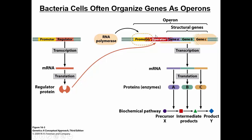Another sequence in the operon is called the operator — a DNA sequence that overlaps with the promoter and the first structural gene. It serves as a landing spot for something called a regulator protein. When the regulator protein binds to the operator, it can either enhance or inhibit the binding of RNA polymerase and, hence, enhance or inhibit transcription. The regulator protein is made from a regulator gene.